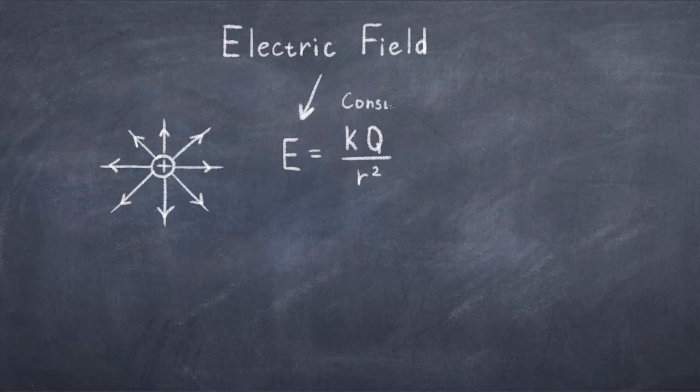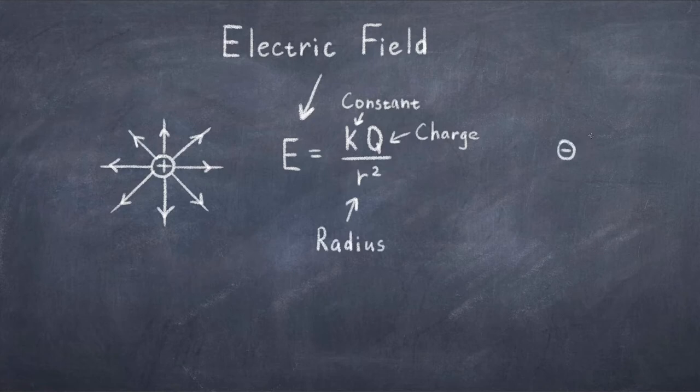Where E is the electric field, k is a constant, q is the charge of the particle, as an example it could be just 1, and r is the radius of the electric field. We see from this that the strength of the electric field falls with the factor of 1 over r squared.